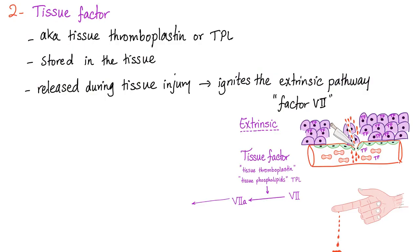We are done with thromboxane A2. Next, we have the tissue factor, also known as tissue thromboplastin or TPL, stored in the tissue. It's the factor in the tissue. Released during tissue injury. After you injure the tissue, the tissue factor comes in contact with the blood and it starts the extrinsic pathway by activating factor VII. VII is now active and it's going to activate factor X into Xa, and common pathway.